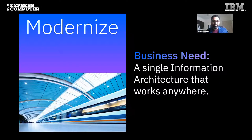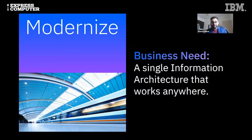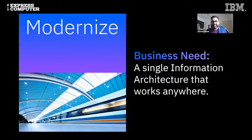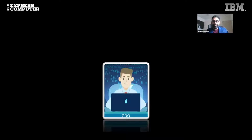There will be two kinds of companies in the next three years: companies that have adopted AI as a mainstream strategy, and companies that will become extinct because they did not adopt AI at the right time. To achieve this, you need modernization, and that modernization requires a single information architecture across the enterprise.